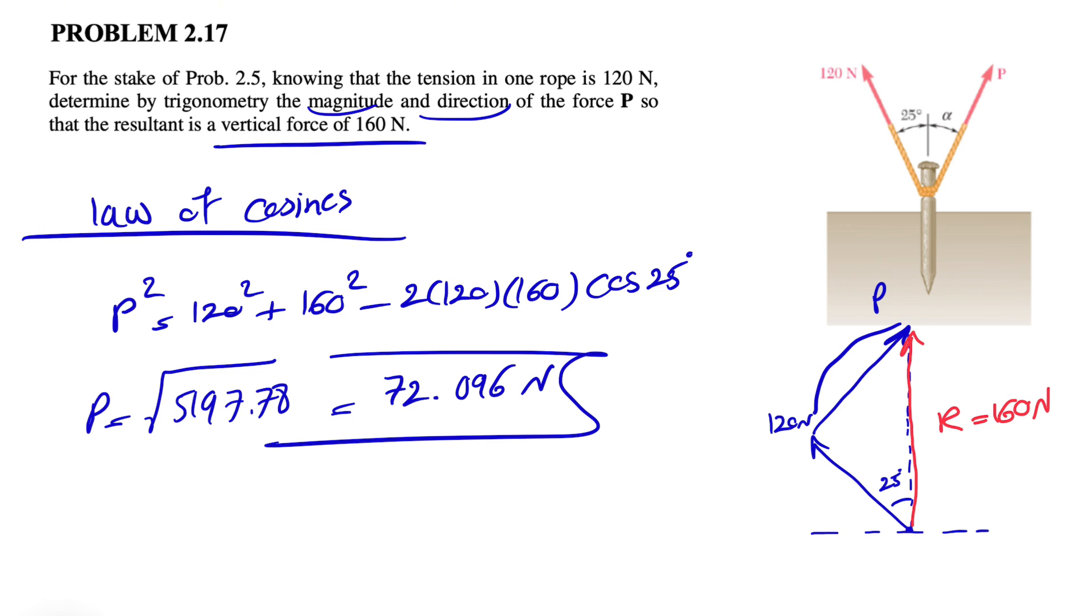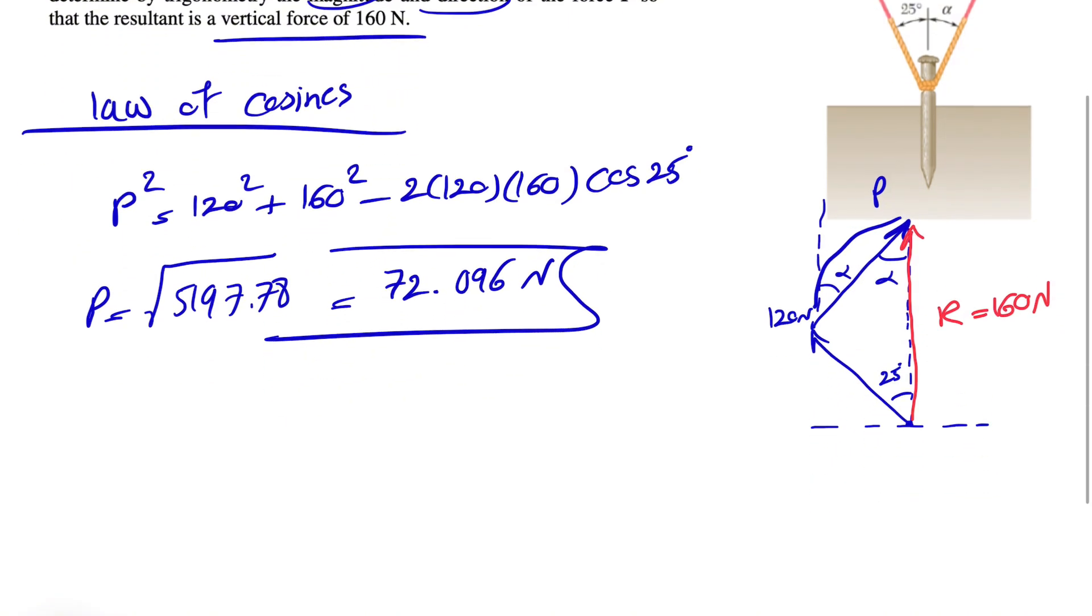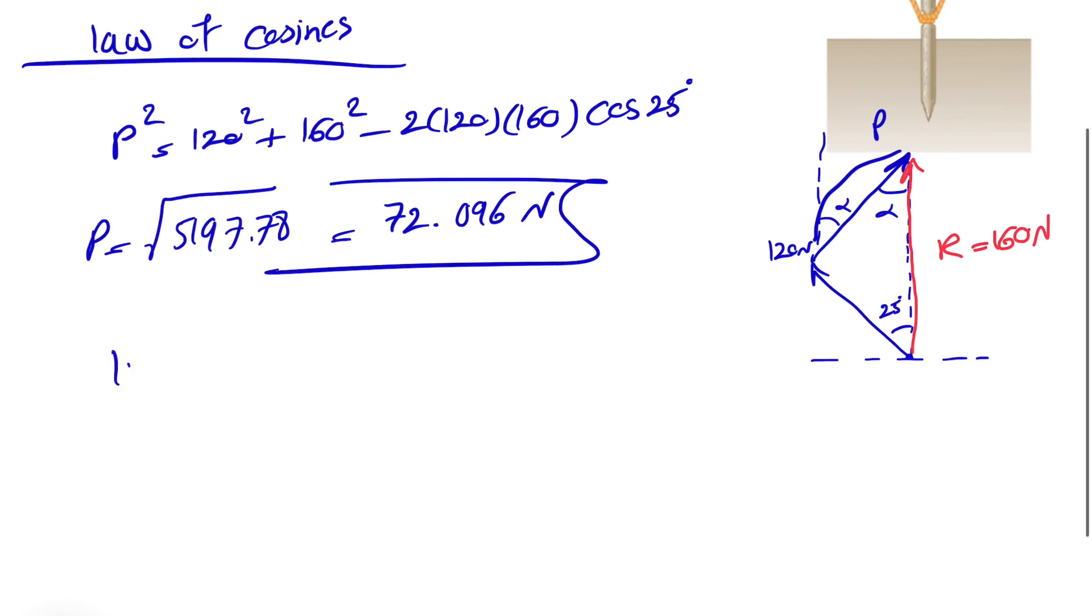Now we need to figure out the direction, or the angle alpha that P makes with our vertical line. This is our alpha, which means this one is alpha two. Now we're going to use the law of sines to find this.